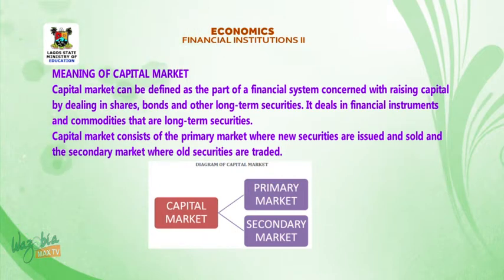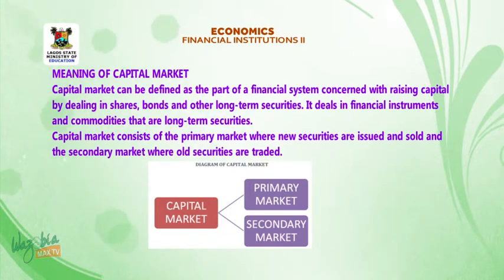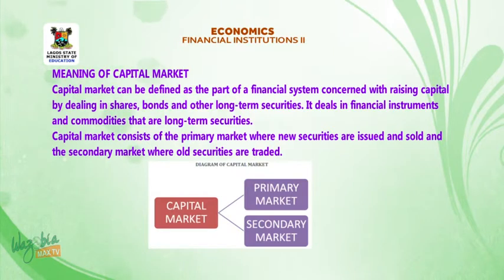Capital markets consist of the primary markets, where new securities are issued and sold, and the secondary markets, where old securities are traded.